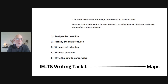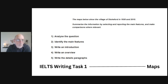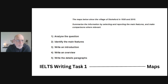First of all, you want to take a good look at the question and the task that you have to achieve. In this case, it says the maps below show the village of Stokeford in 1930 and 2010. You want to analyze the question, and then it tells you your task: summarize the information by selecting and reporting the main features and make comparisons where relevant.